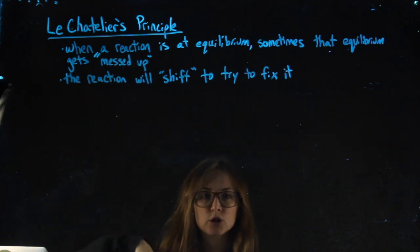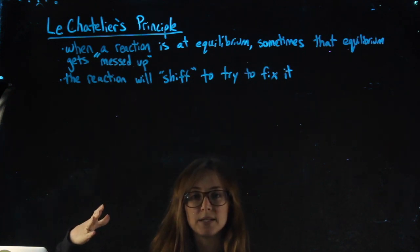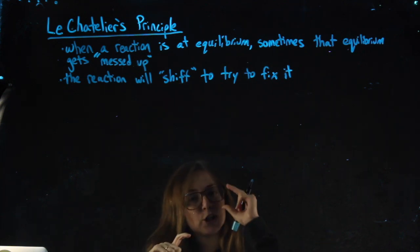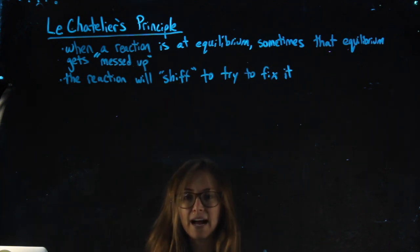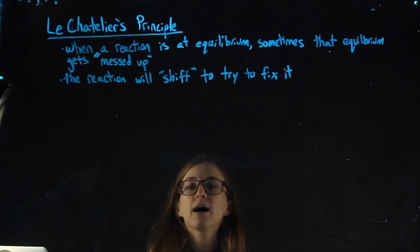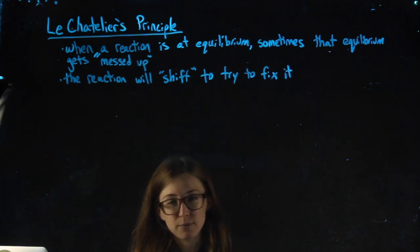Le Chatelier's principle describes situations where you have a system at equilibrium with the right ratio of products to reactants, that K value. But then something happens that messes it up, making the reaction be out of equilibrium.